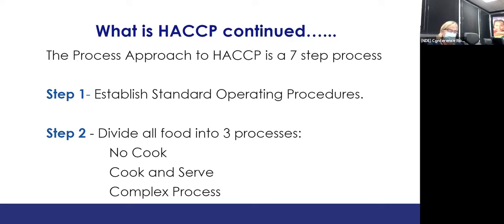The biggest change is ground meats being cooked to 145°F for 17 seconds. Step two is dividing all food into three processes: the no-cook process, the cook-and-serve process, and the complex process — which is cooking, cooling, reheating, and service.